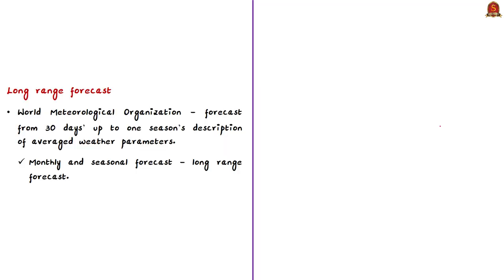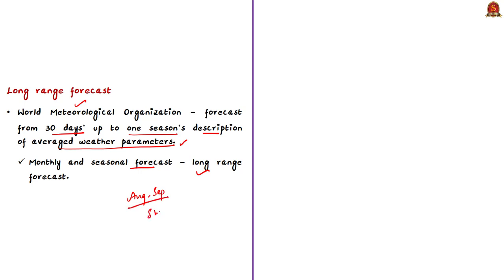According to the World Meteorological Organization, a long-range forecast is defined as the forecast from 30 days up to one season's description of averaged weather parameters. So a monthly forecast or seasonal forecast comes under long-range forecast. IMD has given a forecast for the second half of the 2020 southwest monsoon, which covers August to September months, while the first half covers June to July.